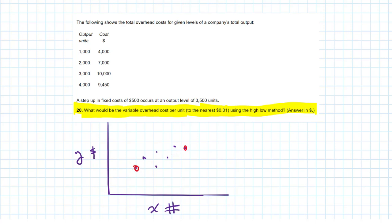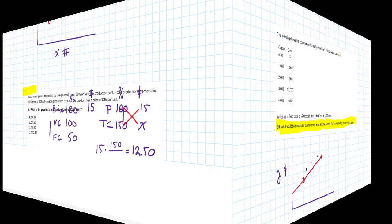Let's check out the question and see what we need to do. Our first step is to read the requirement here. They want us to calculate a variable overhead cost per unit rounded to the cent using the high-low method. So right away, I see where this is going. So that's what we need to do. Let's go back into the question now and see how we'll set up our graph.